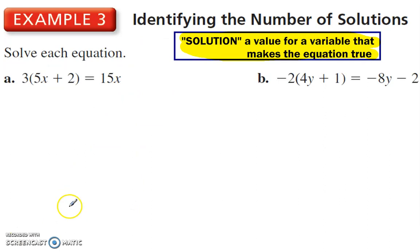Sometimes there might be a different number of solutions. Let's first define: a solution is a value for a variable that makes the equation true. Let's look at this one right here. Distributive property tells me 3 times 5 is 15x. 3 times 2 is 6, is equal to 15x. Now we have to eliminate a variable term. So we'll pick one. I recommend usually the smaller one, but there isn't a smaller one right now. So I'm just going to do 15, so minus 15x.